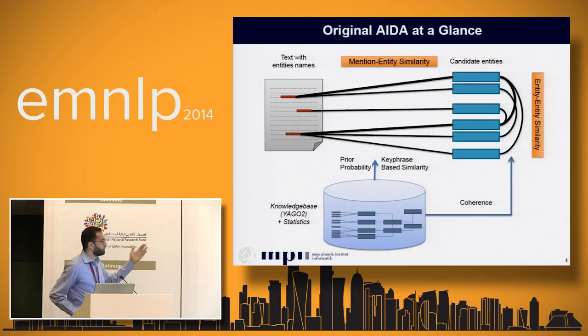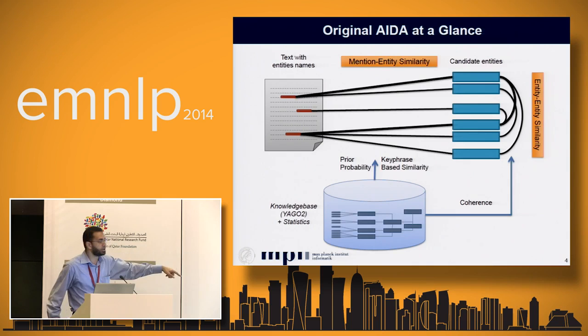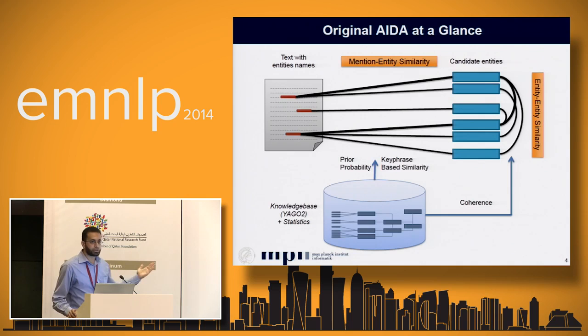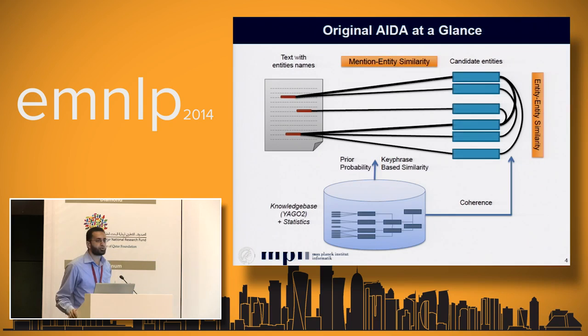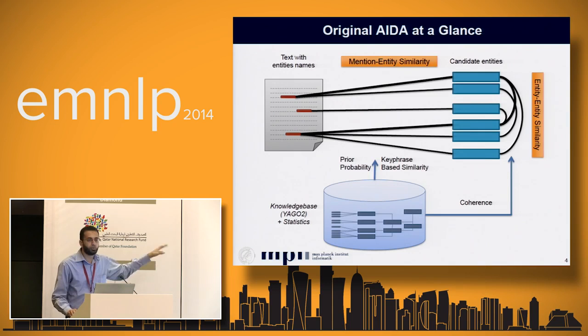Let's first have a quick look at how AIDA works. We cast the NED problem into a graph problem with two types of nodes: mention nodes — the names of entities appearing in the document — and entity nodes. For ambiguous names there can be hundreds of thousands of candidate entities. We have two types of edges: mention-entity edges capturing how similar an entity is to the input text, and entity-entity edges capturing how related two entities are. We solve this by finding a dense subgraph with only one entity connected to each mention, capturing both high similarity between input context and entities, and semantic coherence between selected entities.